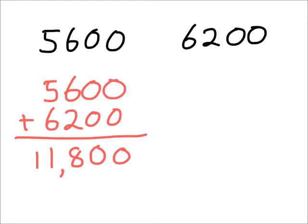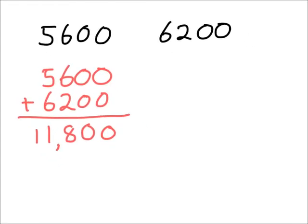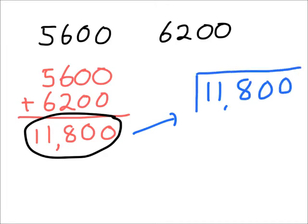Now that we've added the numbers, the second step is halving our answer. So I'm going to take my answer and we're going to half it. Halving, remember, means dividing by two. Let's divide eleven thousand eight hundred by two.